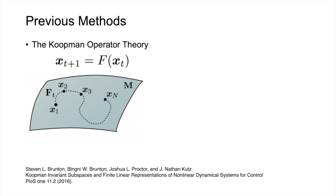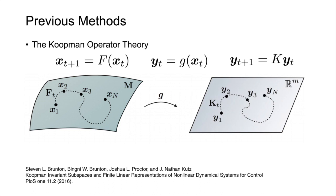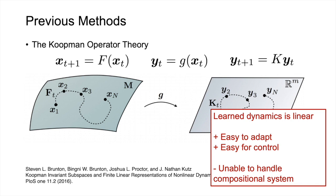Another direction, rooted from the Koopman operator theory, learns a function G that maps the original state X to a higher dimensional latent space Y, such that the dynamics becomes linear in this latent space. The neural dynamics is linear, which makes it easy to adapt and control. However, it is not designed to handle compositional systems, thus lacks the generalization power.